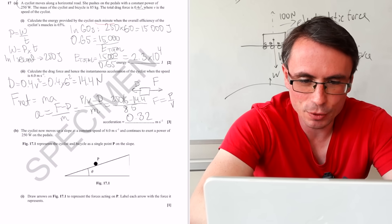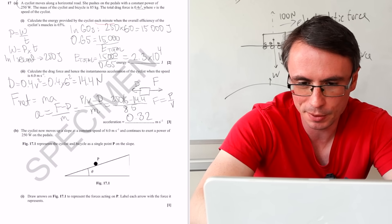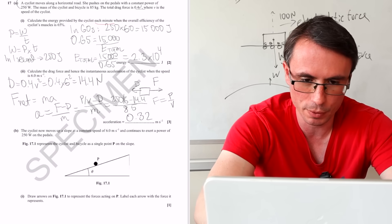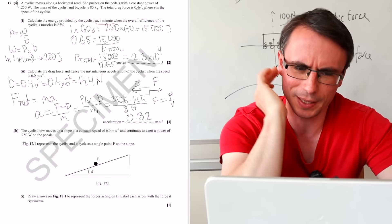Next one, we have a diagram. The cyclist now moves up a slope at a constant speed of 6 meters per second and continues to exert the power of 250 watts on the pedals. This means that the driving force will still be the same.